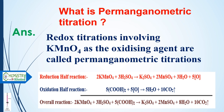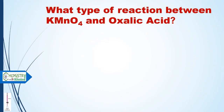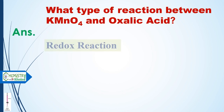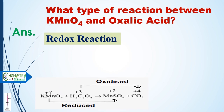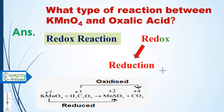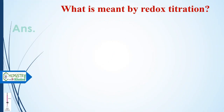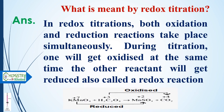What are permanganometric titrations? Redox titrations involving potassium permanganate as the oxidizing agent are called permanganometric titrations. What type of reaction occurs between potassium permanganate and oxalic acid? It is a redox reaction. The word 'redox' comes from two words: reduction and oxidation — it is the combination of reduction plus oxidation.